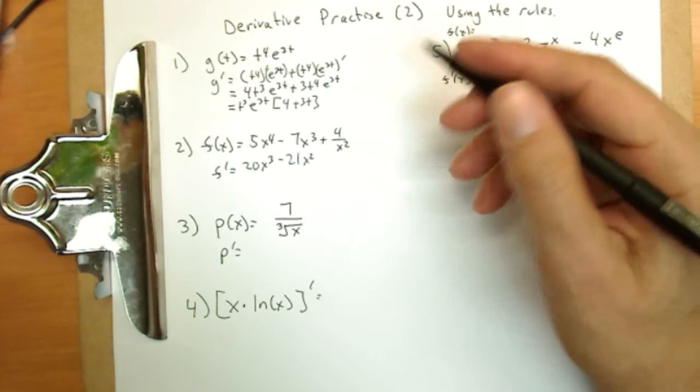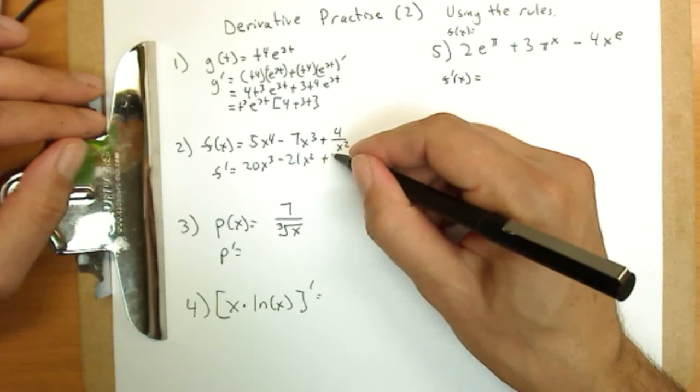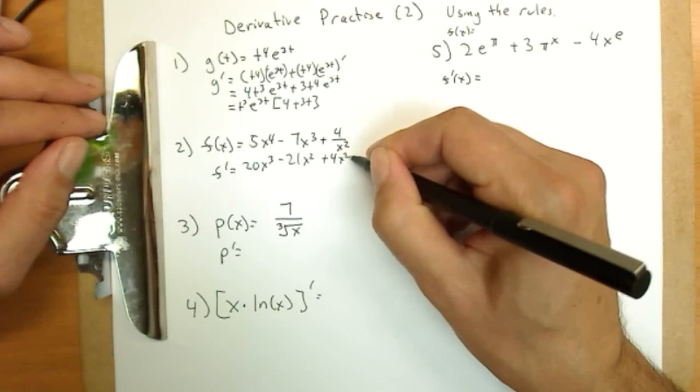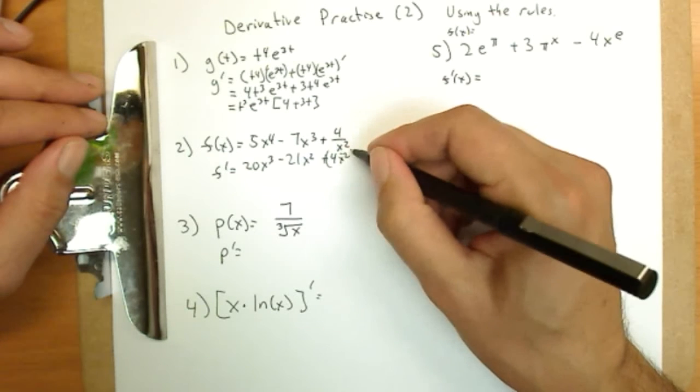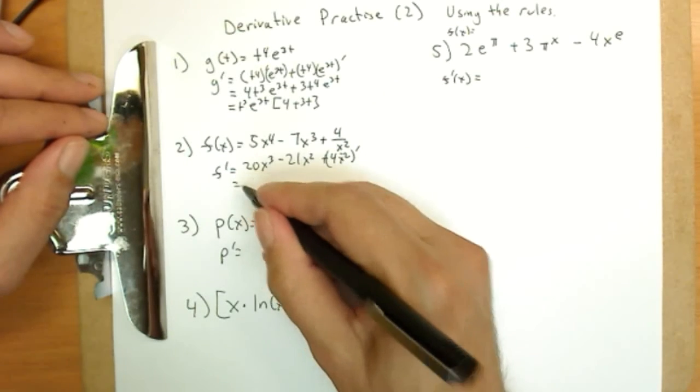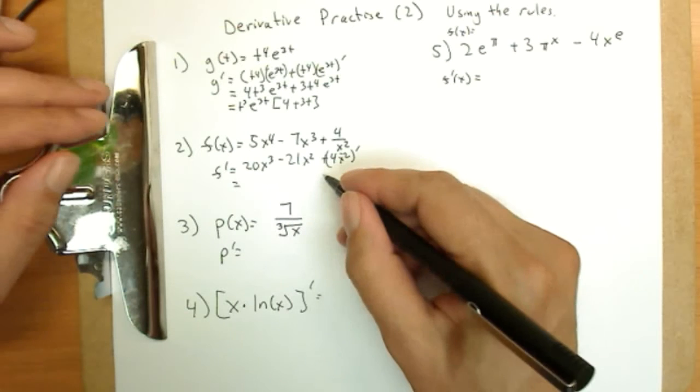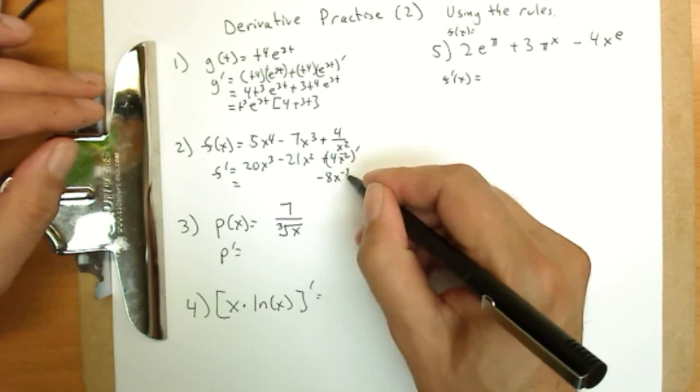This one here, though, the four x squared, before I do the derivative of it, it's going to be easier, rather than using the quotient rule, to write it as four x to the negative two. So I'm still doing its derivative. And those two terms are done. This will now make negative eight x to the negative three.